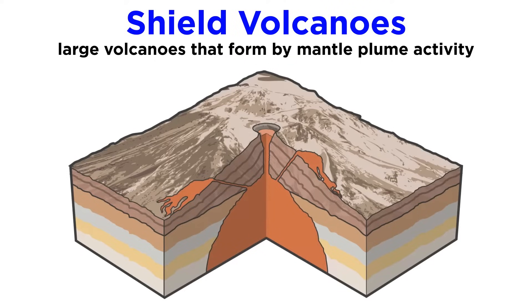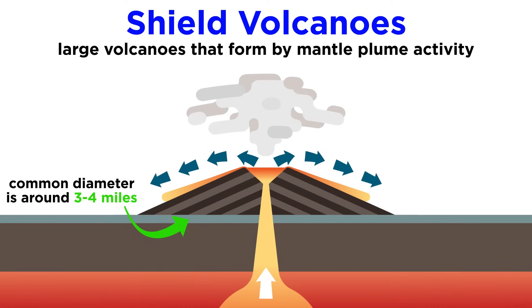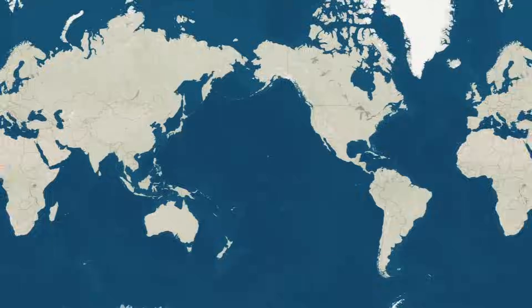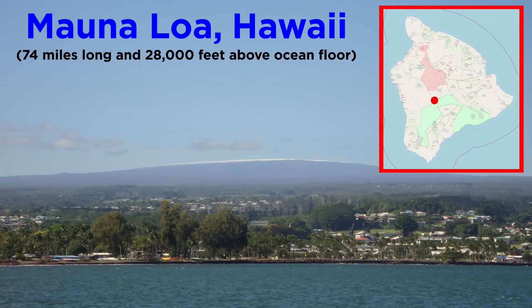Shield volcanoes are some of the largest volcanoes on Earth, and they commonly form by mantle plume activity away from plate boundaries. They almost exclusively extrude runny basaltic lava from small vents and fissures that gradually build up to form a volcanic dome with slopes less than 10 degrees. The diameter of typical shield volcanoes can range from three to four miles with heights up to 2,000 feet. The Hawaiian Islands are some of the best examples — Mauna Loa, one of Earth's most active volcanoes, spans 74 miles from north to south and rises over 28,000 feet above the ocean floor.